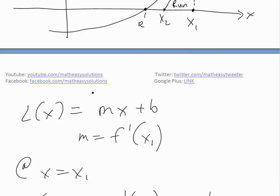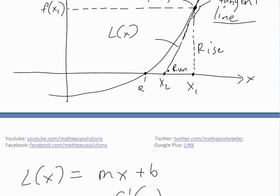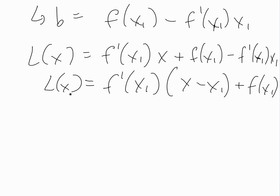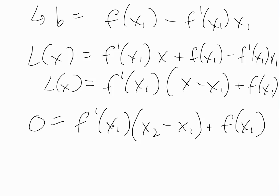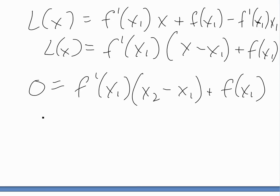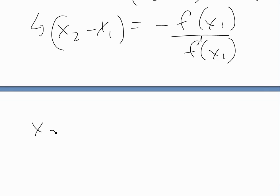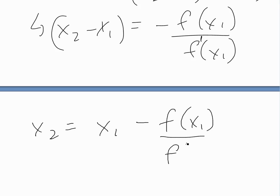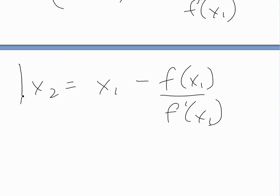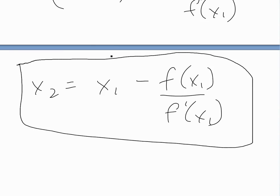To get x2, we set L of x equal to zero, since the tangent line crosses the x-axis there. So 0 equals f prime of x1 times (x2 minus x1) plus f of x1. Rearranging: x2 minus x1 equals negative f of x1 over f prime of x1. Then moving x1 over, we get: x2 equals x1 minus f of x1 over f prime of x1. This is the core of Newton's method — we now have a closer approximation for the root.